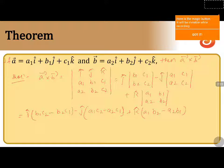When a and b are two vectors and we take the cross product between them, the resulting one is also a vector. The vector so obtained is given by i-cap into b1 c2 minus b2 c1, minus j-cap into a1 c2 minus a2 c1, plus k-cap into a1 b2 minus a2 b1. Like this, the vector product or cross product between the two vectors can be given.